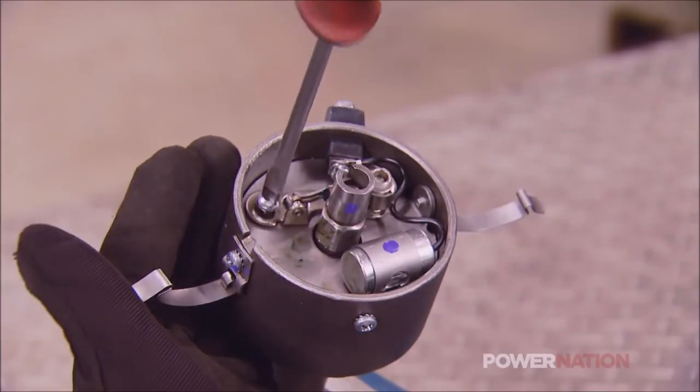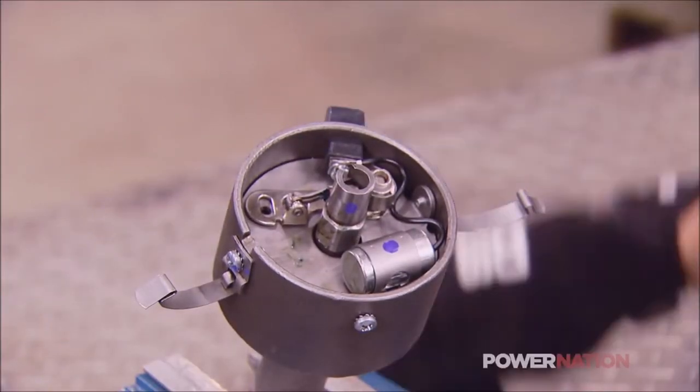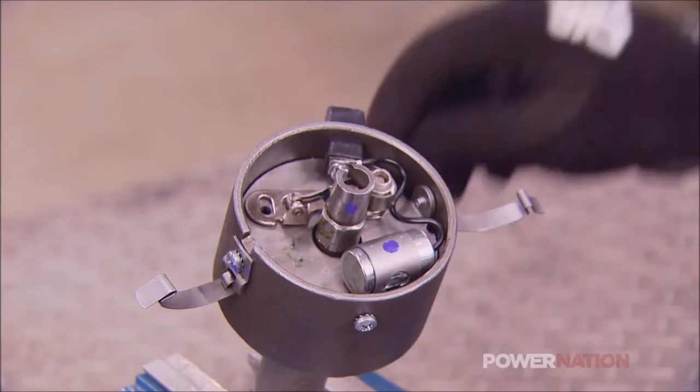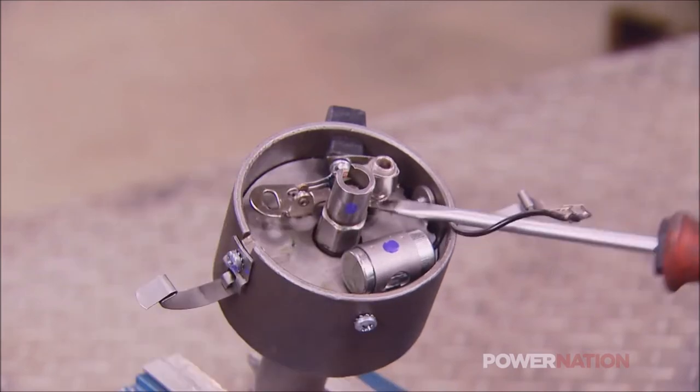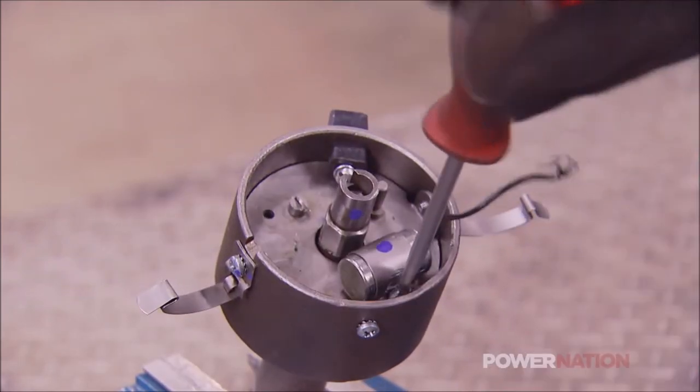First, we'll start by removing all the OE components. We'll remove the power wire inside the distributor, next the points, then the condenser, followed by the power block where our new electronic ignition wires will feed back through the housing.